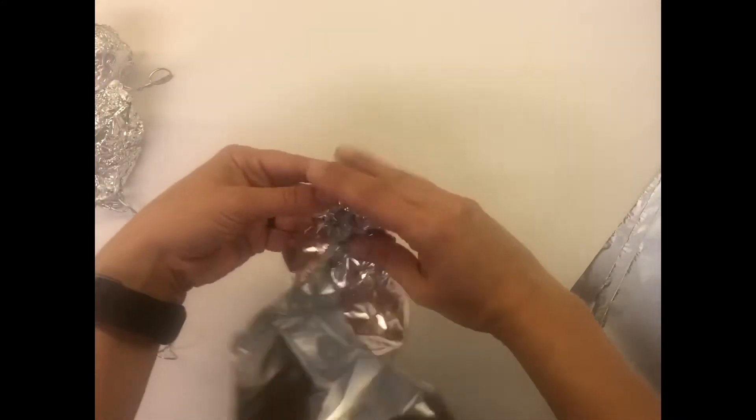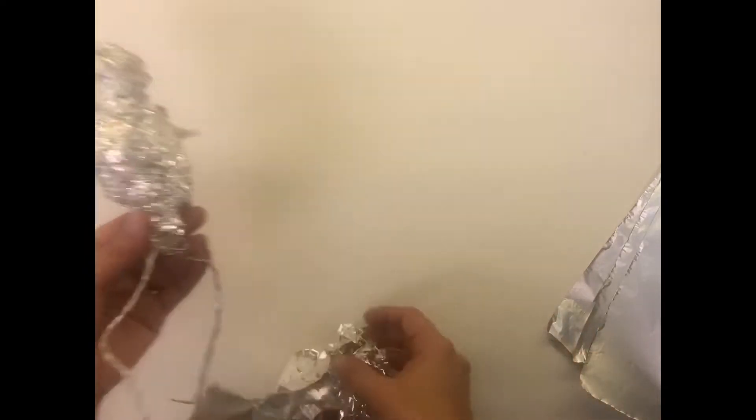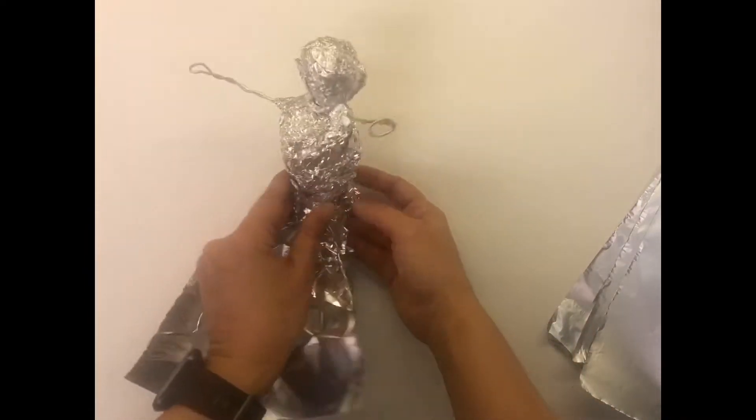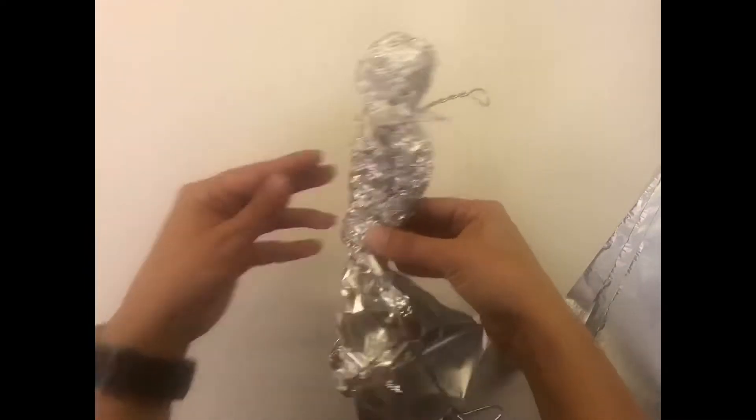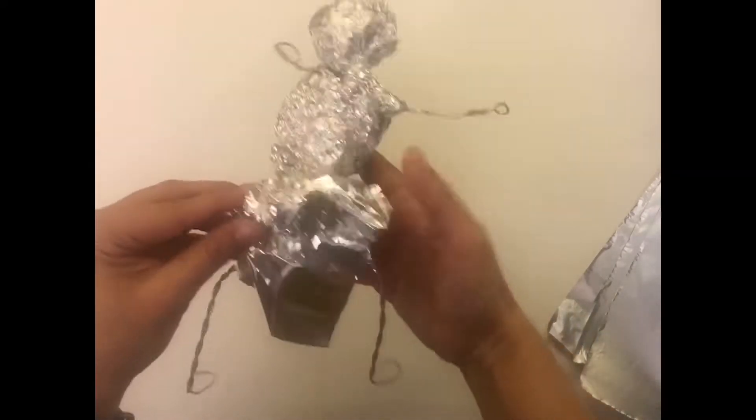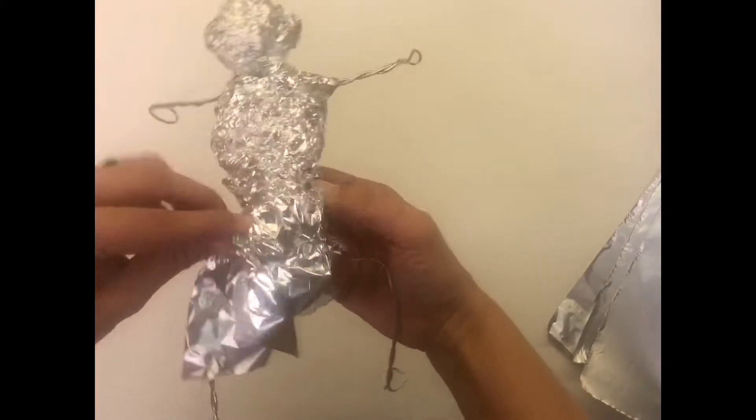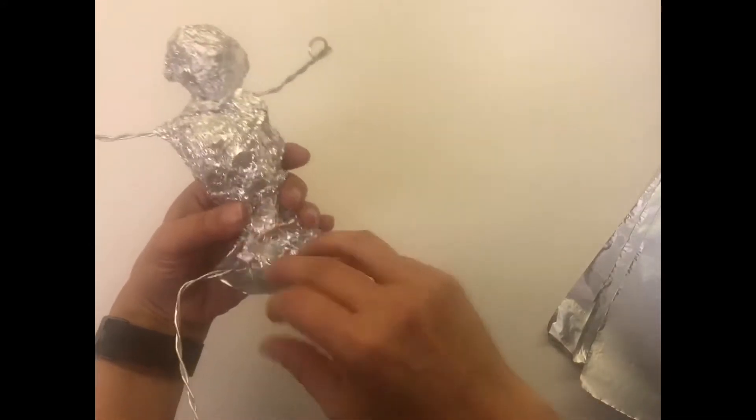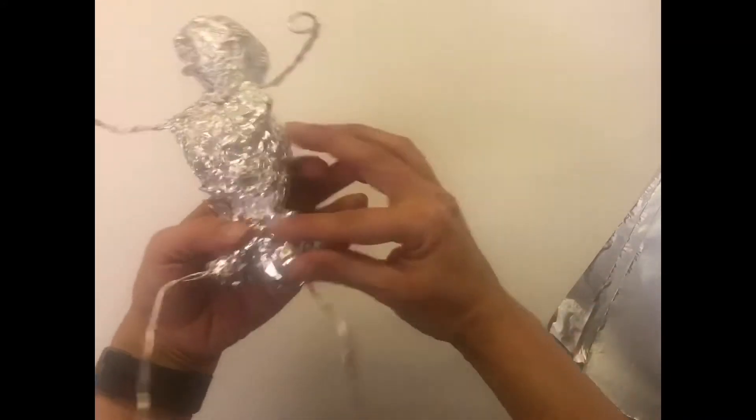So I start with a little ball which is where his bum will be. It's almost like a little diaper. I put the puffy part on the back. Make sure it's scrunched up for his bum. And I'm wrapping that through and around the legs to lock it in place.